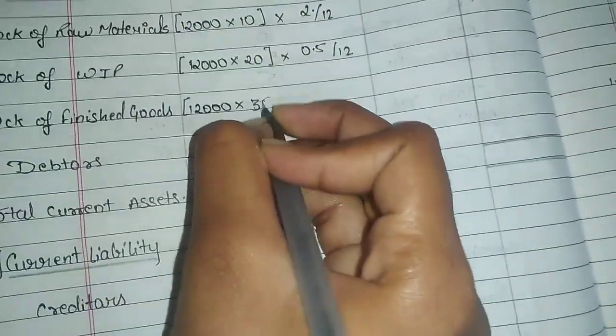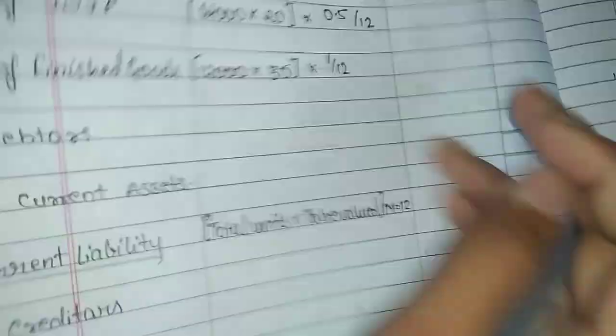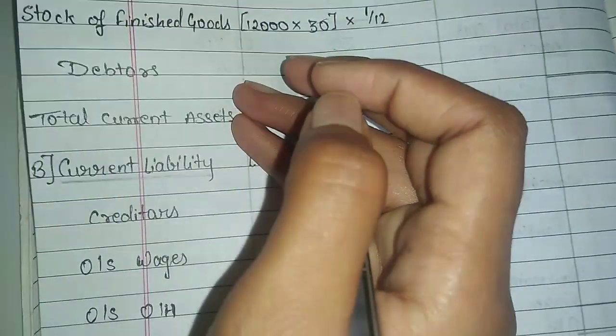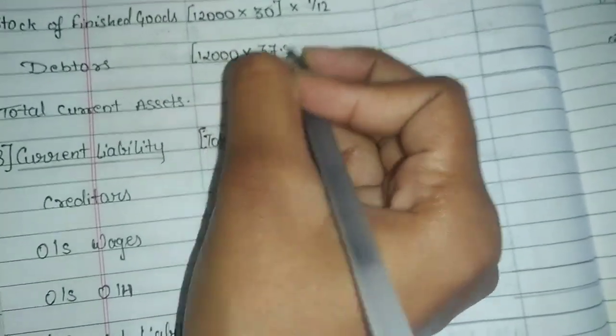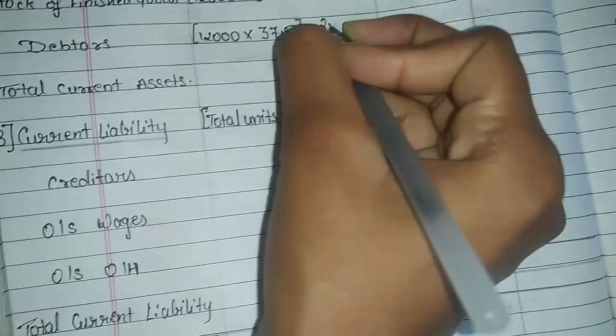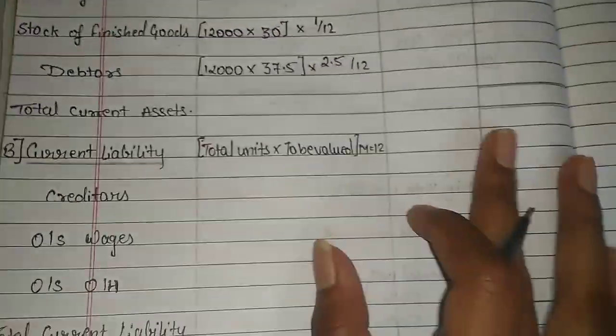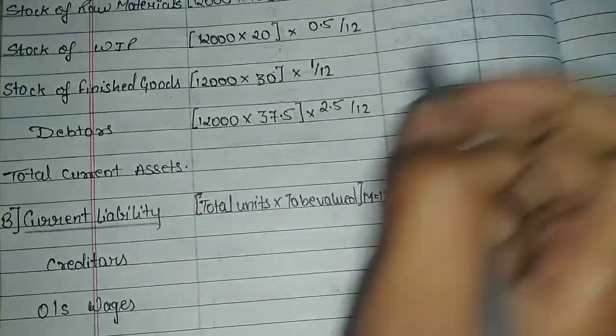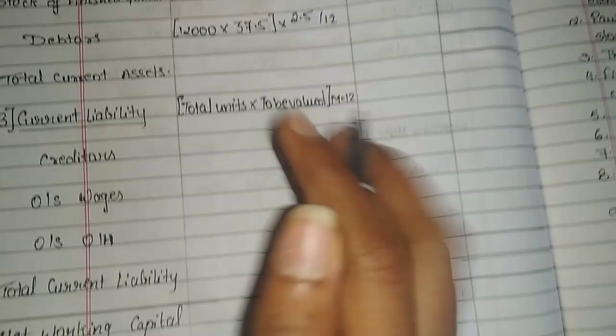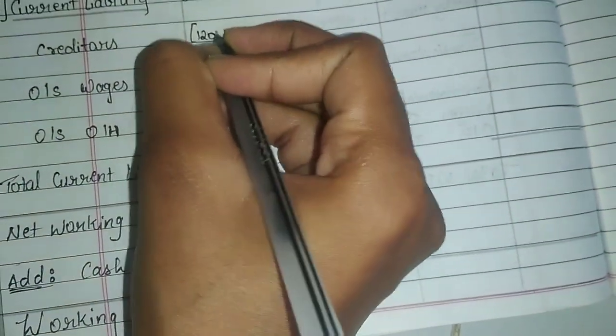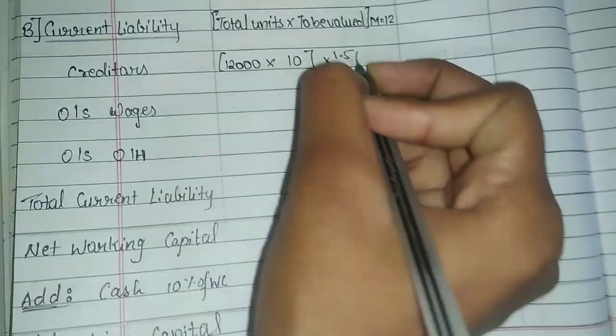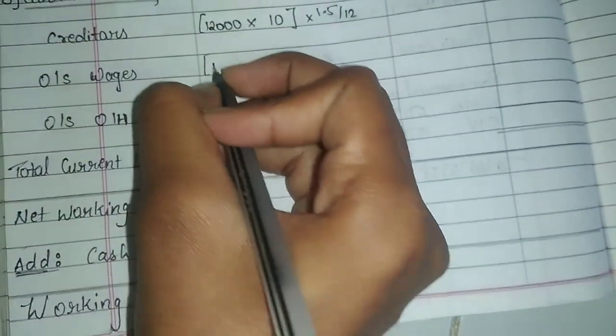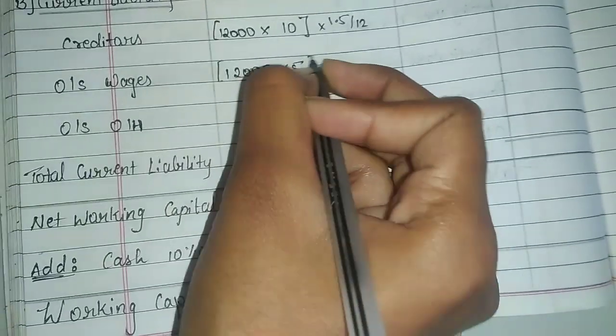Finished goods is 12,000 valued at cost price that is 30 for one month. Debtors is 12,000 at sales price 37.5 for 2.5 months. Cash we will include later. So all current assets we take at 37.5 for the time period.